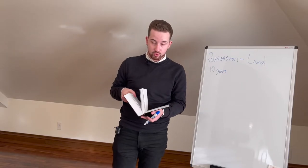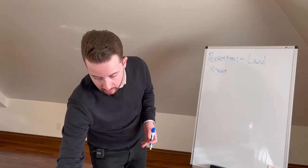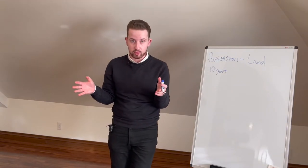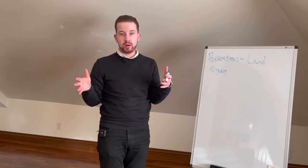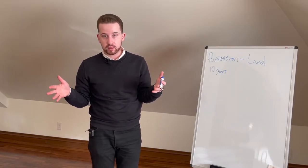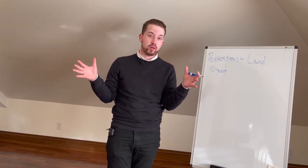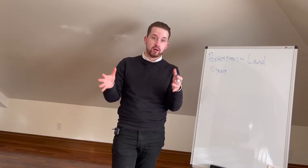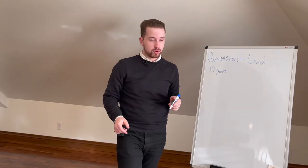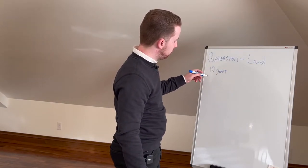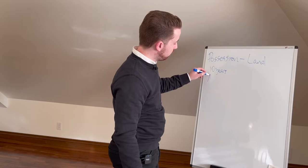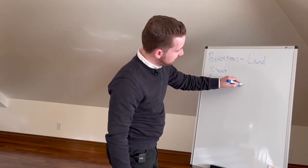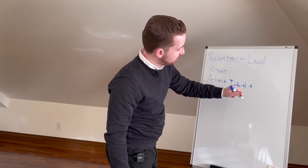There are issues as to how we are going to define possession — what will be sufficient to constitute possession of land. It's not obvious: whether you walk on it, how often you have to be on it, whether you take care of it, whether putting a fence around it is sufficient. Generally, there are going to be three things we'll consider: the action, the intent, and the exclusion.